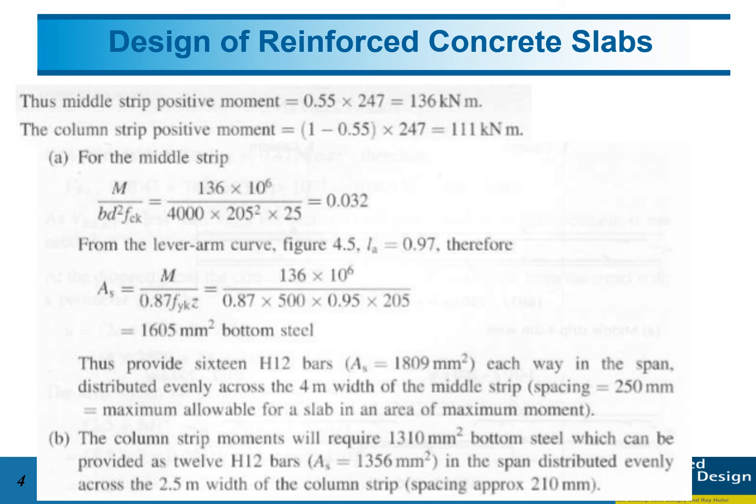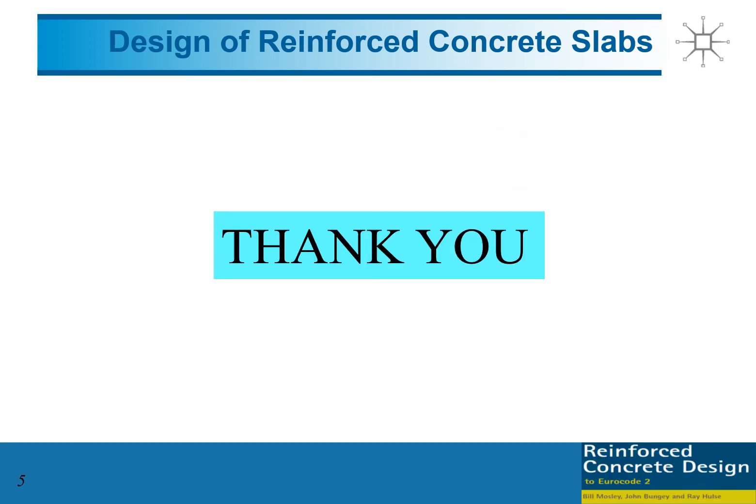Again, we need to determine the number of rebars: area 1356 divided by area of diameter 12, so we round up to 12. We have 12 diameter 12 bars distributed evenly across the 2.5-meter width of the column strip, because the width of the column strip is 2.5 m, so we have a spacing of 210 mm.